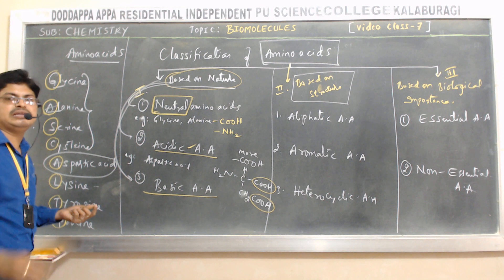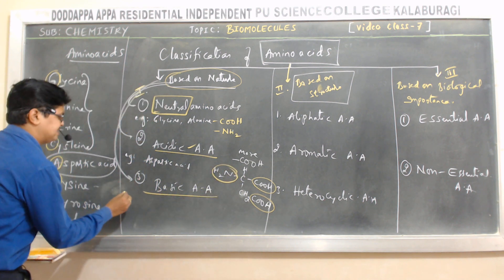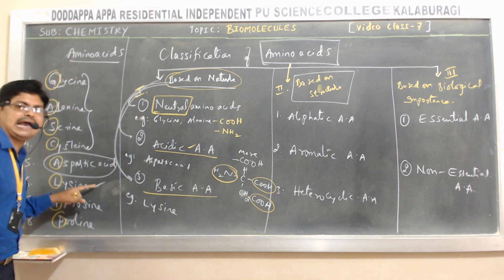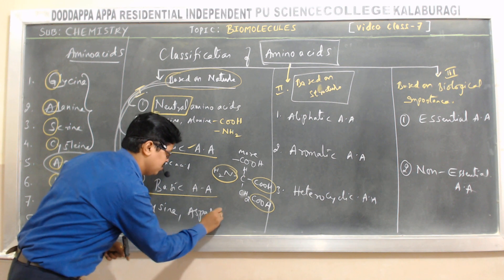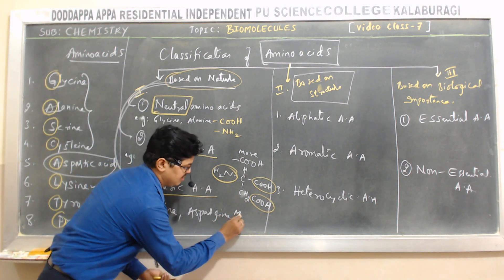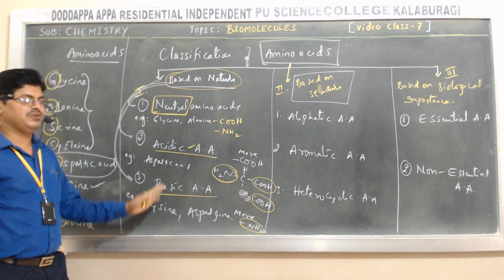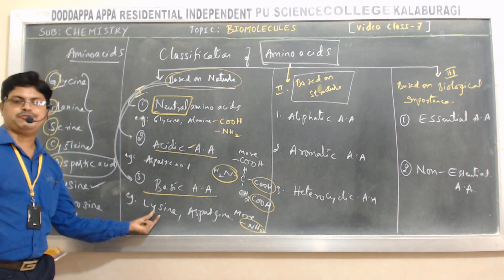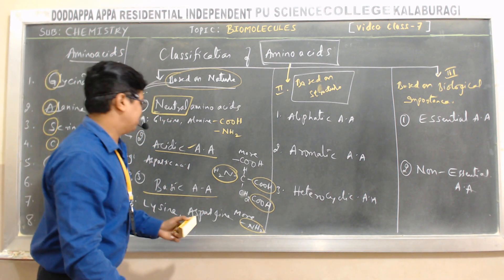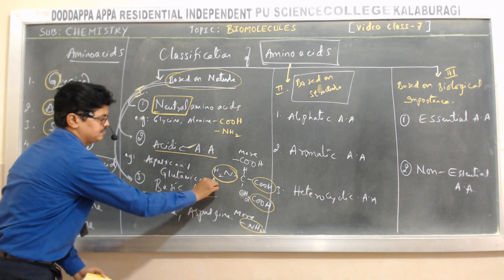Basic amino acids contain more amino groups than carboxylic groups. The amine group is basic in nature. Example: lysine, which contains two amino groups and one carboxylic group, making it a basic amino acid. Another example of an acidic amino acid is glutamic acid. These examples from our list of eight can be used for all classification categories.